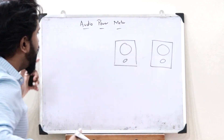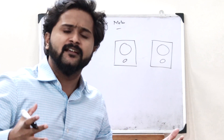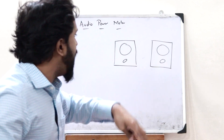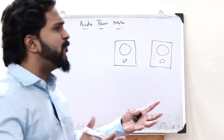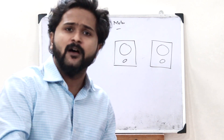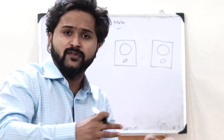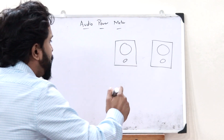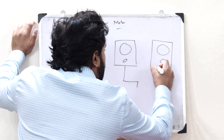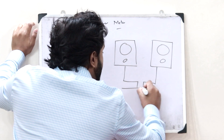We listen to music, we listen to audios, everything through speakers. Here I've drawn a pair of speakers. But simply with the help of a pair of speakers, we can't play an audio — this speaker has to be connected to something. Therefore, this speaker is connected to a device which is referred to as an amplifier.